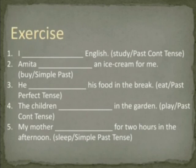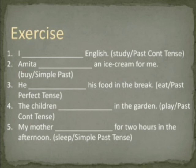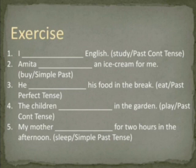Now let us solve an exercise. In the first blank, we need to use the past continuous tense of the verb 'study'. The answer is 'was studying'. So the sentence is: I was studying English. Second sentence: Amita bought an ice cream for me. We need to use the simple past tense of the verb 'buy', so the answer is 'bought'. Amita bought an ice cream for me.